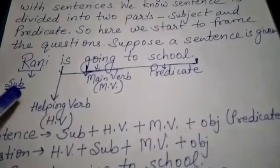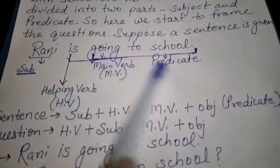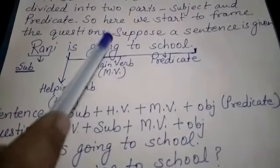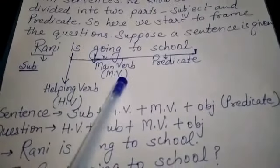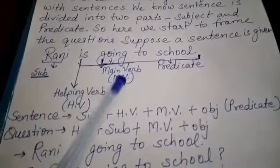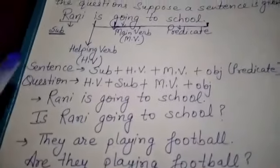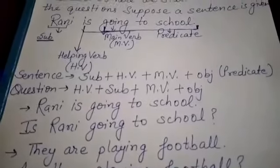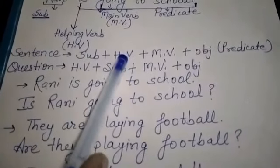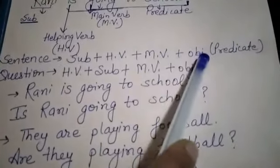Rani is the subject. In the predicate, there is a helping verb and a main verb. 'Is' is the helping verb and 'going' is the main verb. So the formulation of a sentence is: subject, helping verb, main verb, and object.